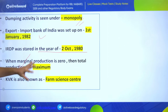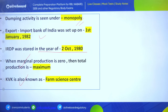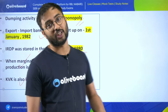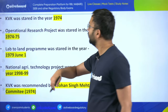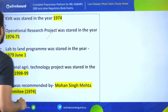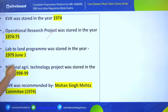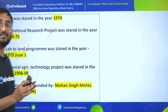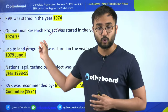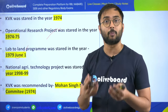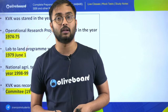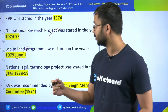When marginal production is zero, total production is maximum - remember this. KVK is also known as farm science center - Krishi Vigyan Kendra, started in 1974 at Pondicherry. Operational Research Project was started in 1974-75. Looking at these questions, you should recognize we are now covering agri extension education.